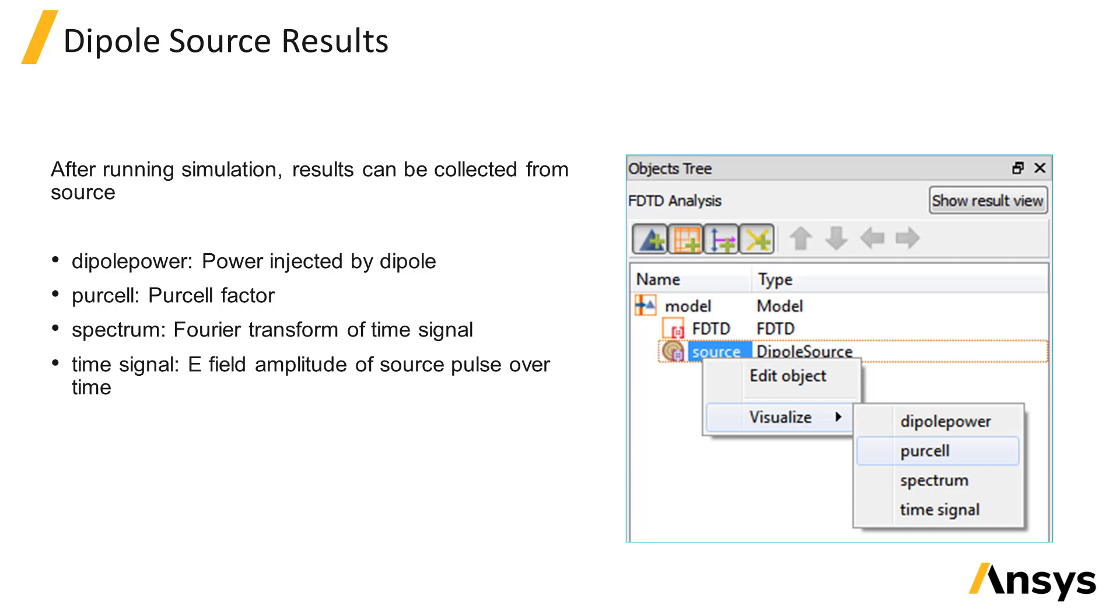After running a simulation, the dipole source returns results: dipole power, Purcell, spectrum, and time signal. The dipole power result gives the analytic power injected by a dipole in a homogeneous medium as a function of frequency.